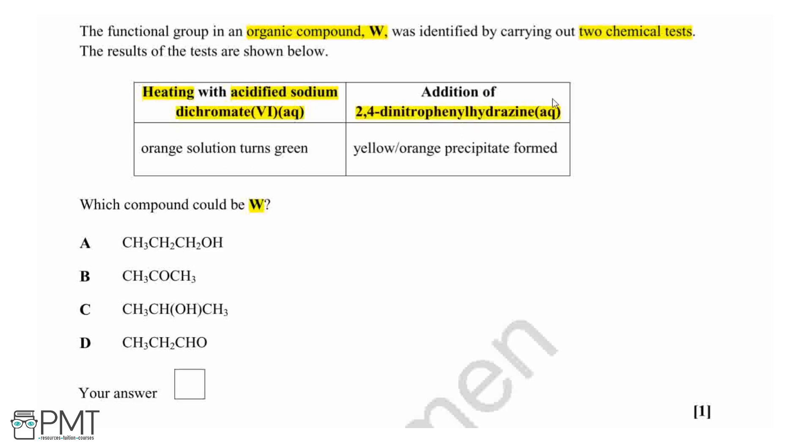2,4-dinitrophenyl hydrazine, also known as 2,4-DNP. This is the test for a carbonyl bond, which is found in either an aldehyde or a ketone.